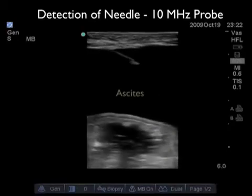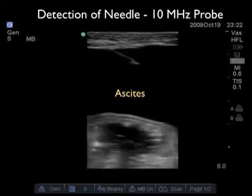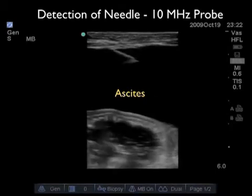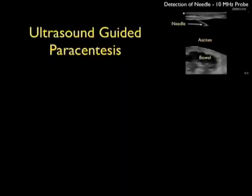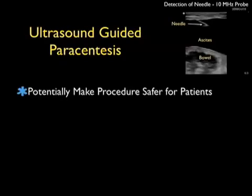In this video clip we can see how using the higher frequency 10 MHz probe allows real-time guidance of the needle down into the ascites pocket. We see detection of the needle coming in from left to right through the abdominal wall with the tip of the needle safely parked within the ascites fluid. Notice that the bowel is distant to the tip of the needle, thereby minimizing any risk of bowel puncture during the paracentesis procedure. A sterile sheath must be placed over the probe during this procedure.